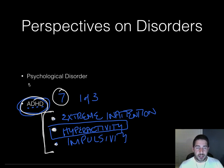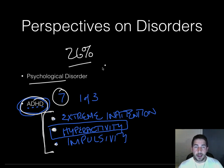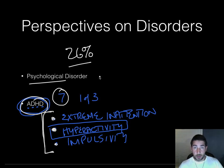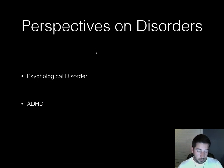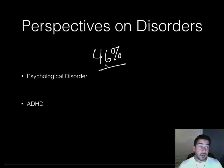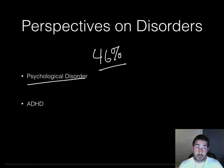One interesting thing about psychological disorders is that 26% of adults in any given year can be classified with a psychological disorder — so one in every four adults will have a psychological disorder at some point. And 46% over the course of their life, meaning nearly one in every two people could be classified with some sort of psychological disorder.